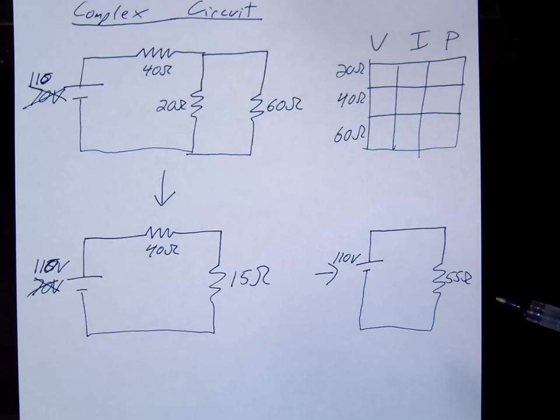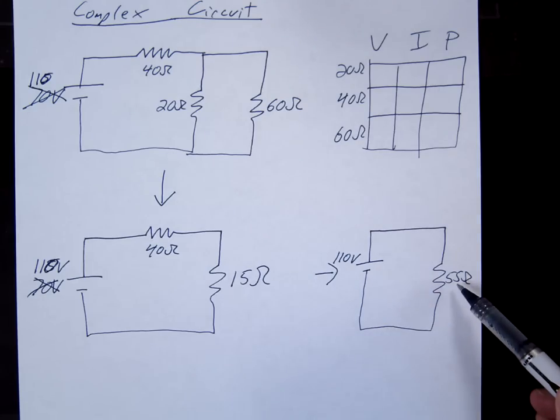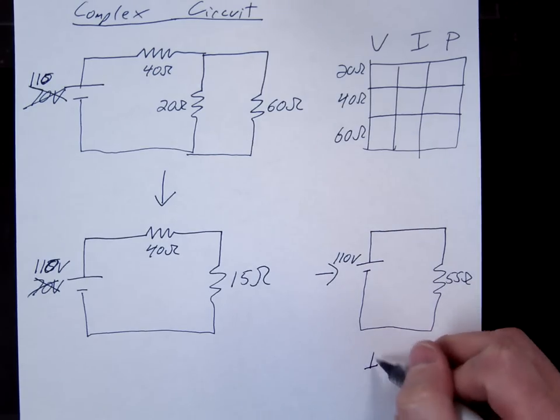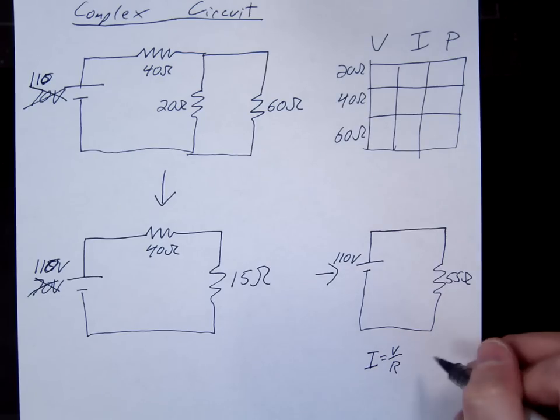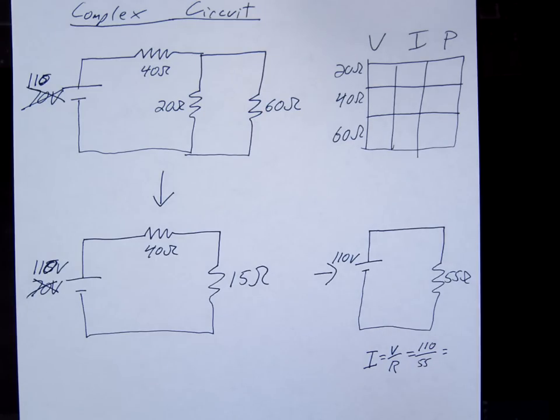Once you've done this, now we're just going to go backwards and we're going to start solving for missing things. Specifically, currents and voltages. We're going to find missing currents and missing voltages. So we're going to start with the simplest, which would be this one right here. So we know the voltage, we know the resistance. What are we missing? The current. So we're going to find the current through here. We're just going to use our Ohm's Law. V equals, I equals V over R. One ten divided by fifty-five gives us a current of two amps.